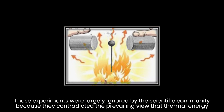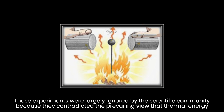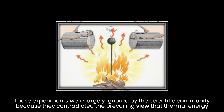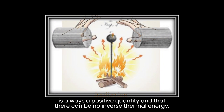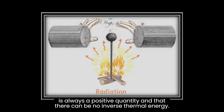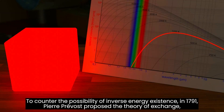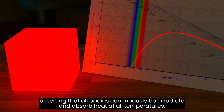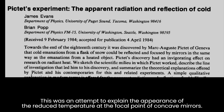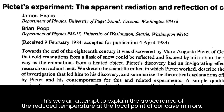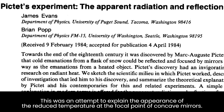These experiments were largely ignored by the scientific community because they contradicted the prevailing view that thermal energy is always a positive quantity and that there can be no inverse thermal energy. To counter the possibility of inverse energy existence, in 1791, Pierre Prévost proposed the theory of exchange, asserting that all bodies continuously both radiate and absorb heat at all temperatures. This was an attempt to explain the appearance of the reduced temperature at the focal point of concave mirrors.